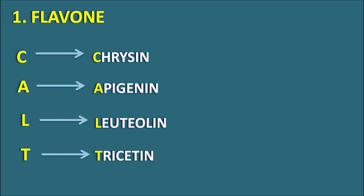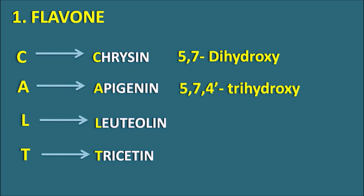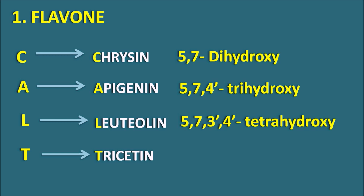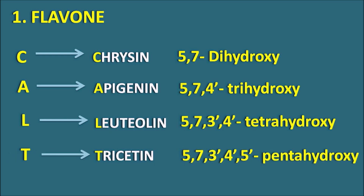Chrysin, apigenin, luteolin, and tricetin are arranged based on the increasing number of OH groups. Chrysin has OH groups at the 5 and 7 positions — 5,7-dihydroxy. Apigenin has an additional OH at the 4' position of the phenyl ring — 5,7,4'-trihydroxy. Luteolin adds one more, giving 5,7,3',4'-tetrahydroxy. Tricetin is pentahydroxy — 5,7,3',4',5'.